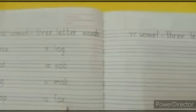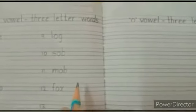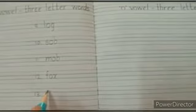Next word is hot. So below fox, write hot. Below hot, write cod.